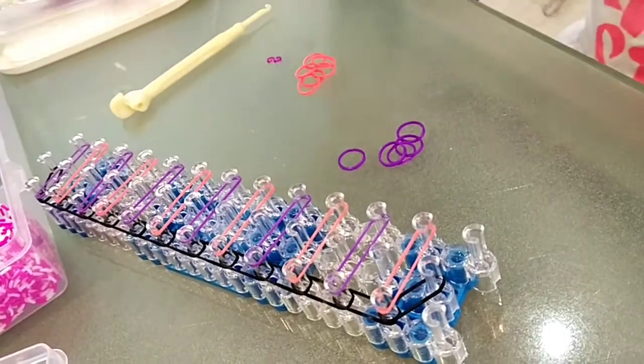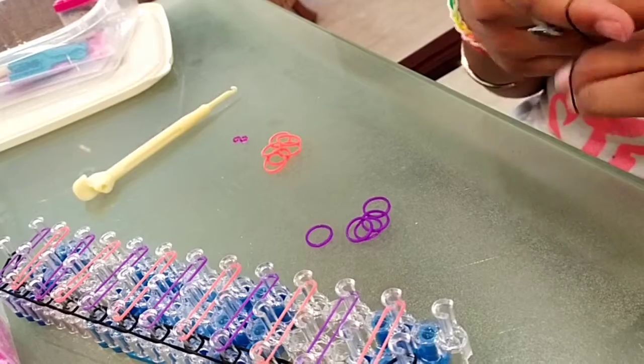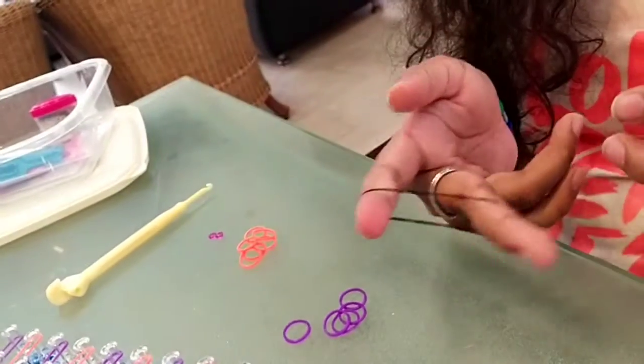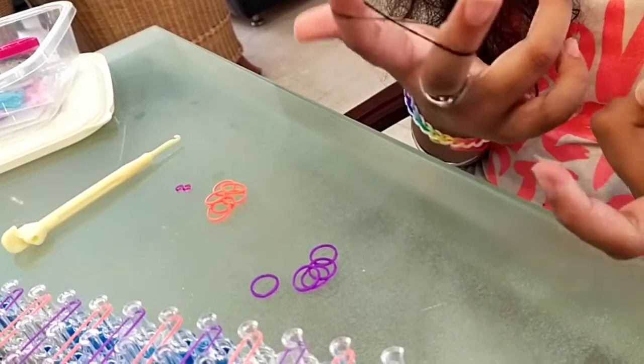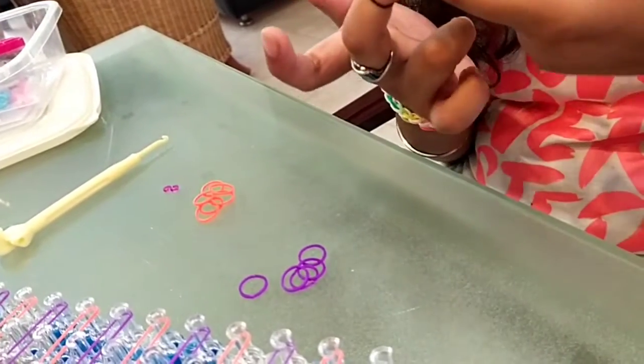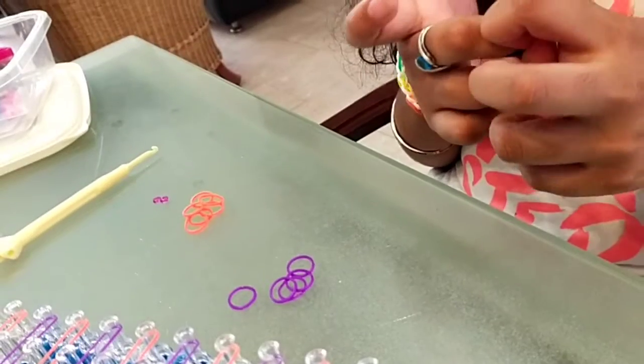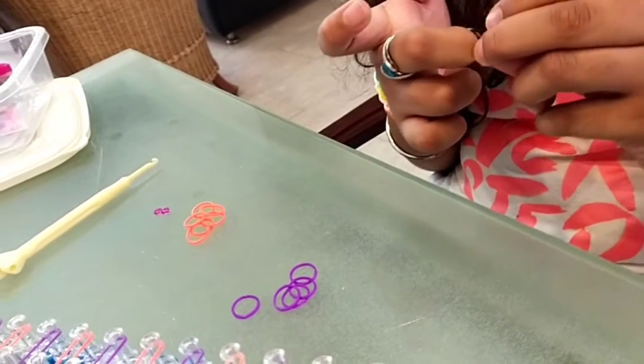Take a black or any other color and make a cap band, which is putting a rubber band like this, turn it around like an eight, put it on top, and then take it out and place it here.